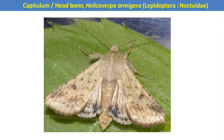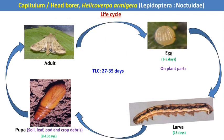The name itself indicates that Helicoverpa armigera directly attacks the heads of the sunflower and yield is directly reduced. It is a Lepidopteran pest having 4 life stages: egg, larva, pupa, and adult. The adult is called a moth, and the female moth lays their eggs on different tender plant parts, after which the caterpillar emerges out.